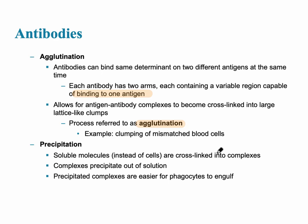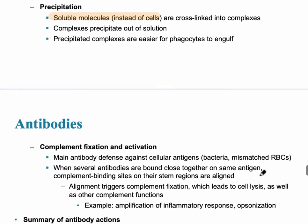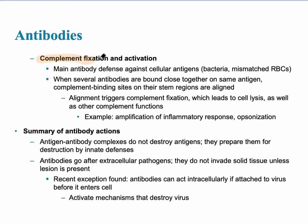The third step is precipitation. Think of it like rain falling from the sky — in this case, soluble molecules instead of cells are cross-linked into complexes, making the precipitated complexes easier for phagocytes to engulf. Finally, the last step is complement fixation and activation, the main antibody defense mechanism against cellular antigens such as bacteria, mismatched red blood cells, etc. This occurs when several antibodies bind close together on the same antigen, amplifying the inflammatory response. A process called opsonization also occurs here.